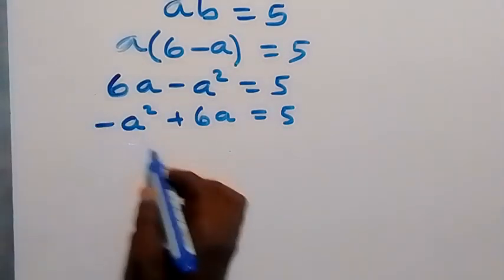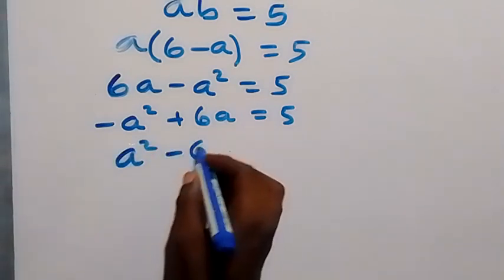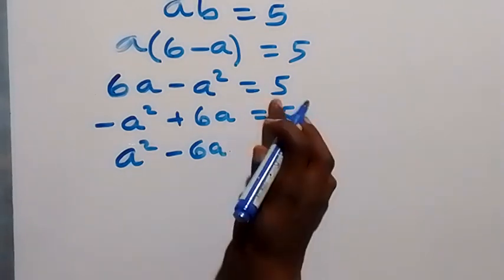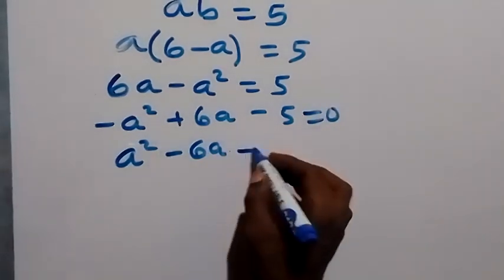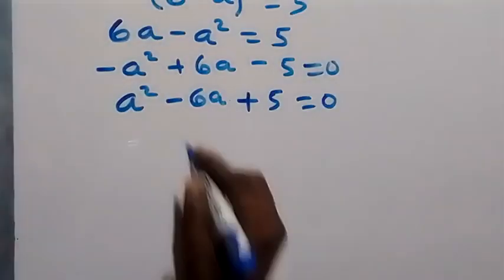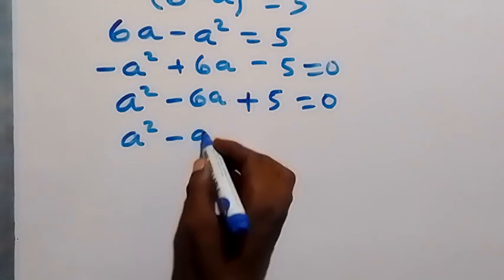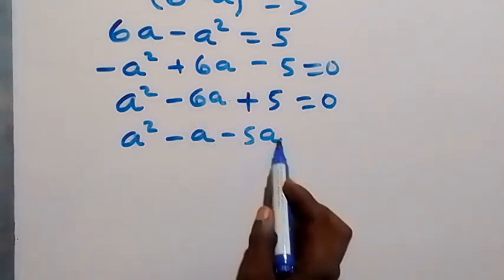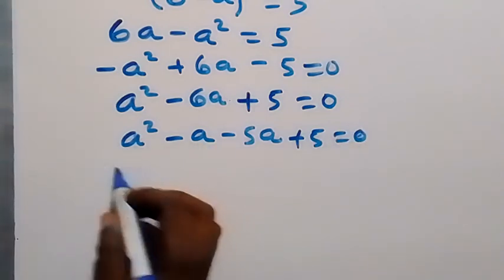We multiply through by minus 1 to remove the negative, so this becomes a squared minus 6a plus 5 equals 0. Now we factorize: we need two numbers that multiply to give plus 5 and add to give minus 6, which gives us minus 1 and minus 5.